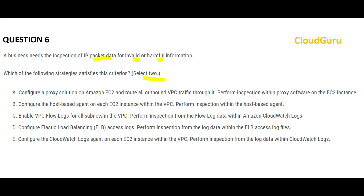Options C, D, and E are all talking about logs. Logs only tell you when the package was delivered, when it moved to the airport, when it reached a warehouse, and so on — but logs will never tell you what is inside the packet. Similarly, all three of those options will not tell you what is inside the IP packet. So I'm left with two options.